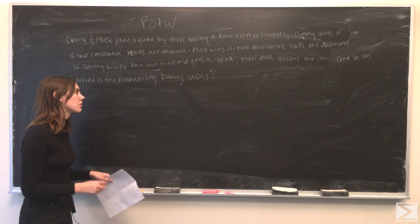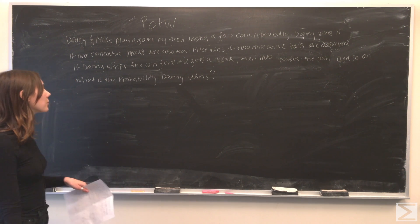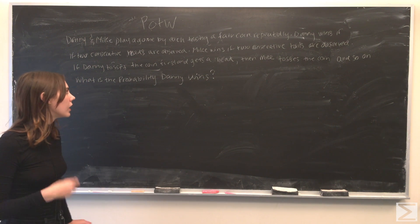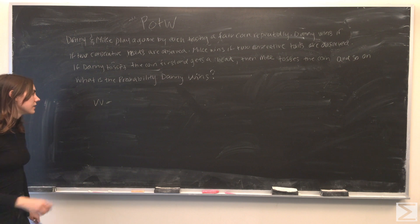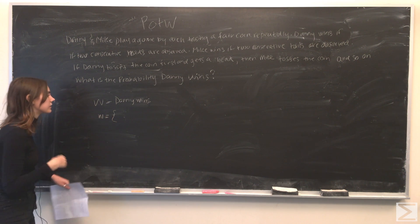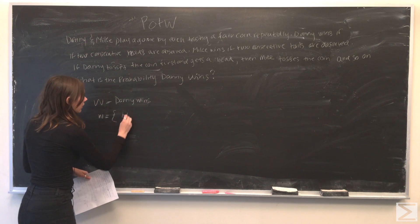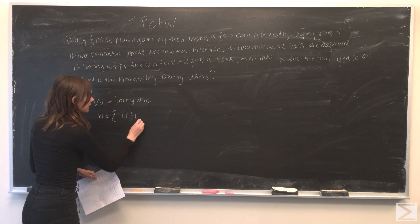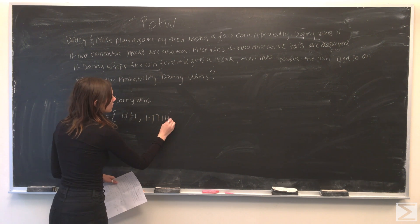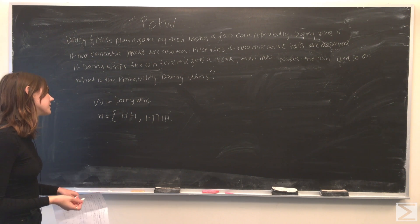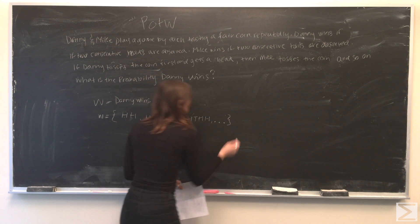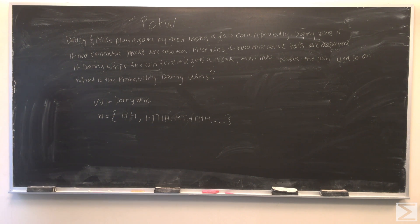Basically, Danny first tosses the coin, then Mike, then Danny, then Mike, and that continues until one of them wins. We know that Danny first tosses the coin and receives a head. We define W as the event that Danny wins. W is equal to the subset of events where Danny gets a head, Mike gets a head, Danny gets a head, Mike gets a tail, Danny gets a head, Mike gets a head — and this just continues on infinitely until we get two consecutive heads to end the game.